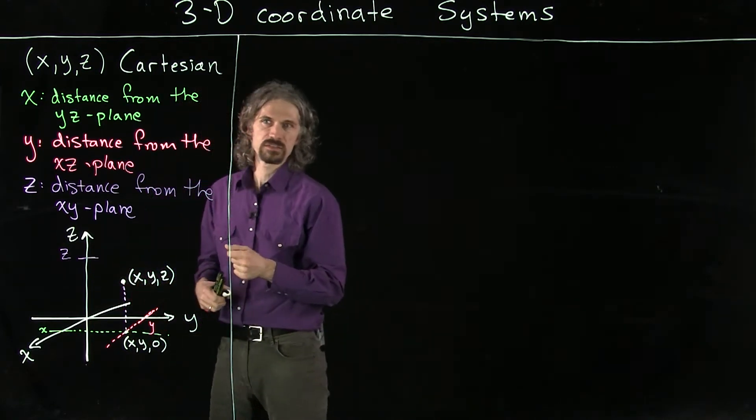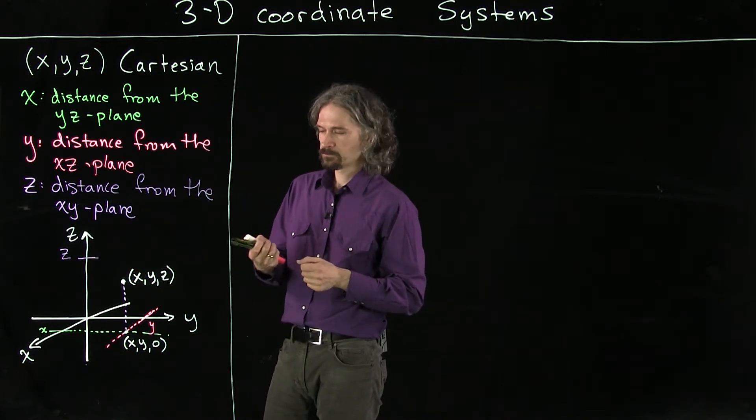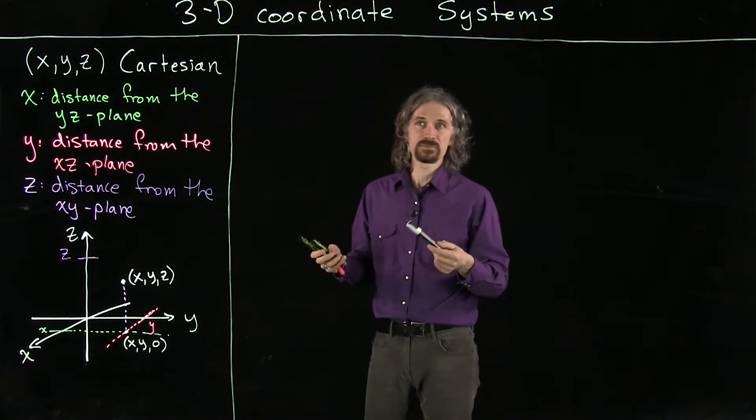And so that's how we have a location in three dimensions described with the Cartesian coordinate system. You move in the x direction, then you move in the y direction, then you move in the z direction, and you can get to that location. You can do those direction moves independently in any order. Now let's talk about cylindrical coordinates.